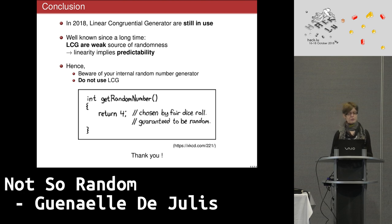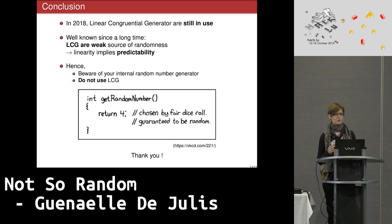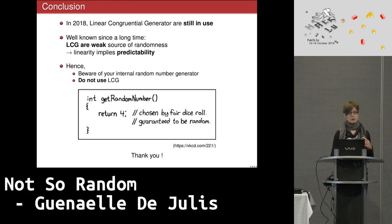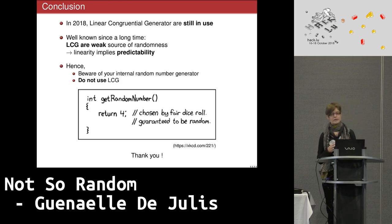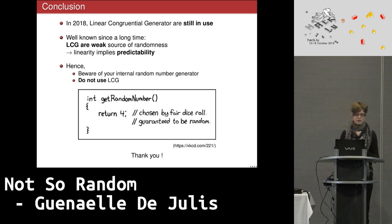To conclude, I was really surprised that in 2018 linear congruential generators are still in use, at least by Java. It is well known since many years that they are weak sources of randomness. We need uniformity and non-predictability, and a linear congruential generator applies a linear relation — so it is fully predictable. Just be sure of the internal random number generator of your programming language, and stop using linear congruential generators.